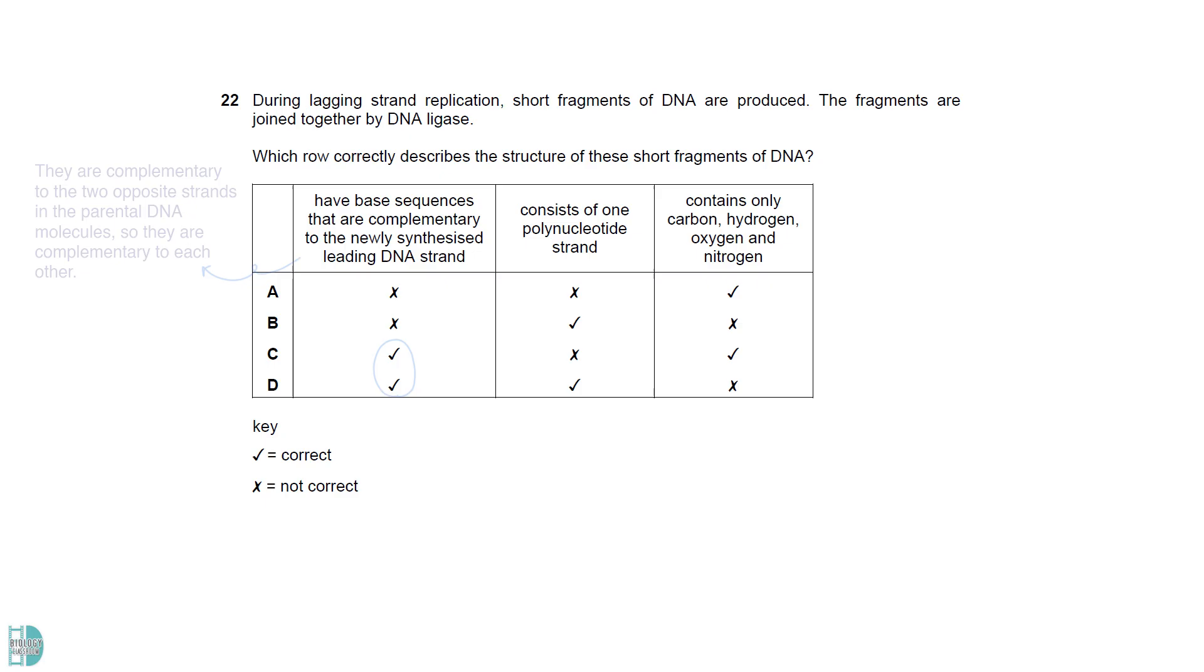The lagging strand and leading strand are complementary to the two opposite strands in the parental DNA molecules. So, they are complementary to each other. The Okazaki fragments at the lagging strand are one new strand of DNA. So, it is one polynucleotide strand. DNA contains phosphate as well. So, the third column is not correct.